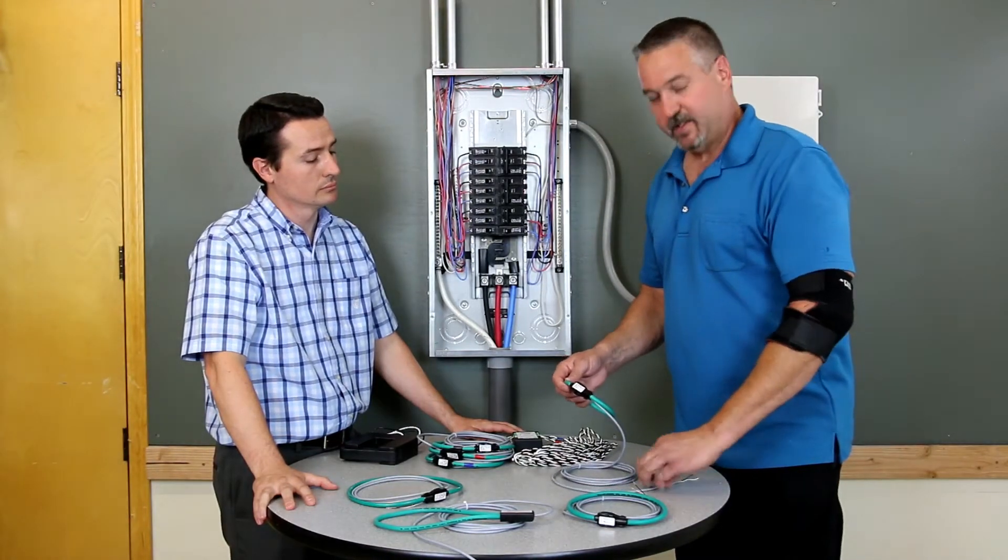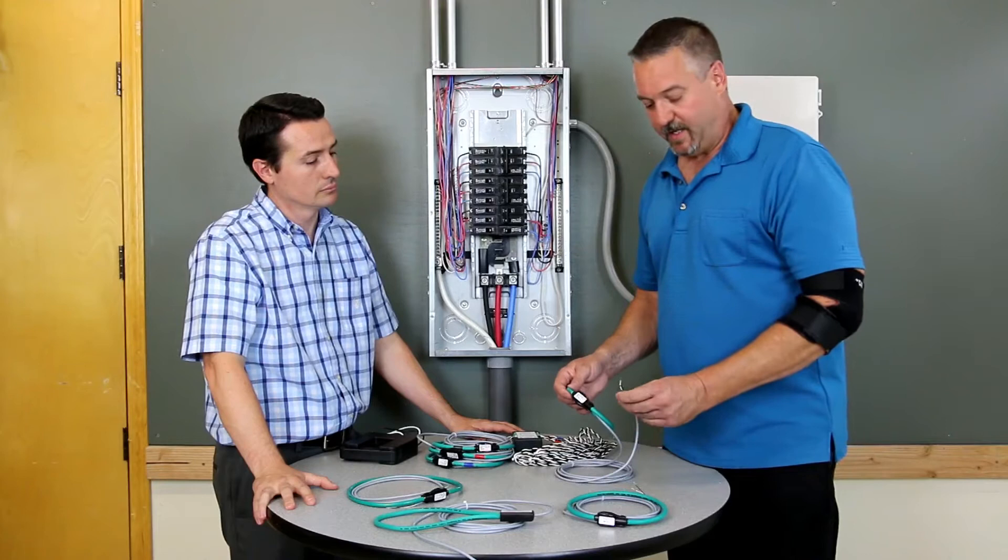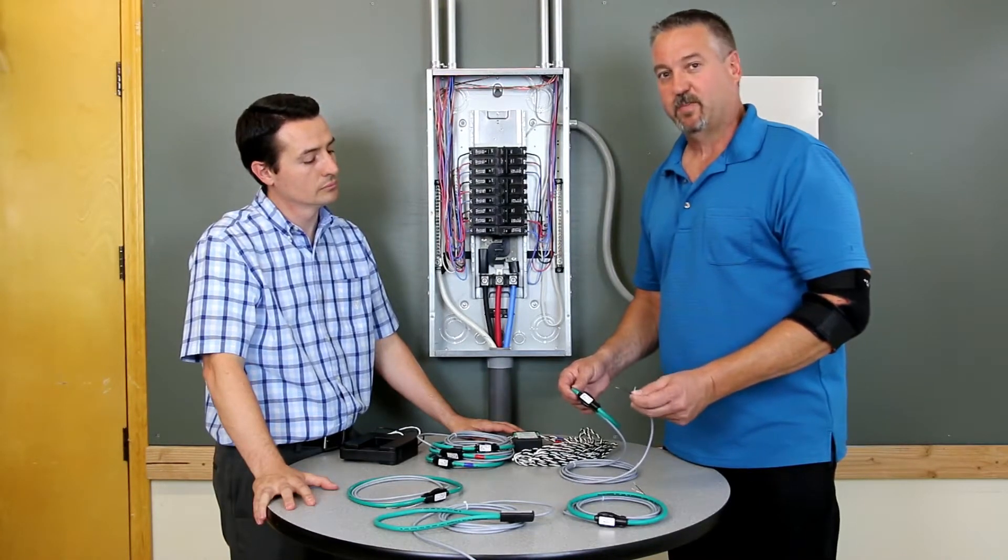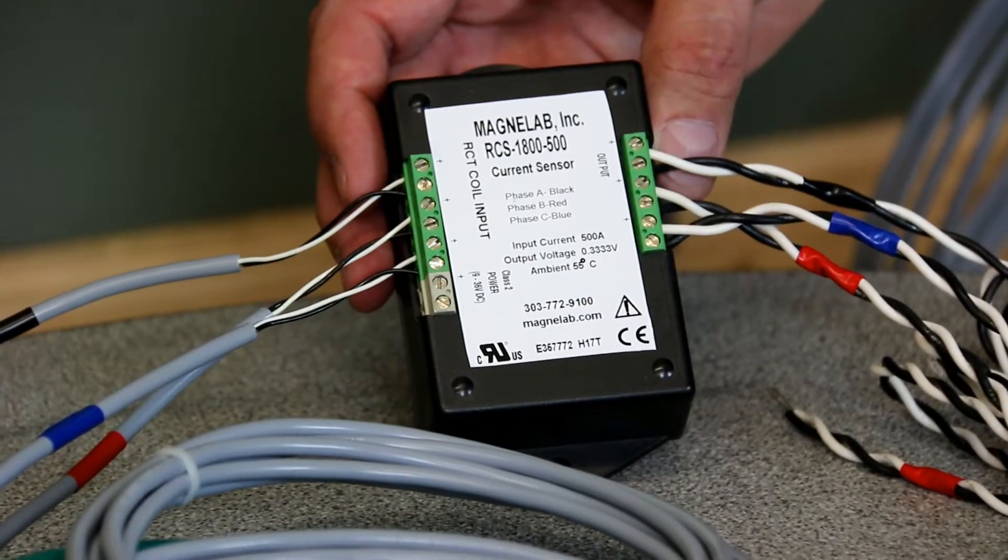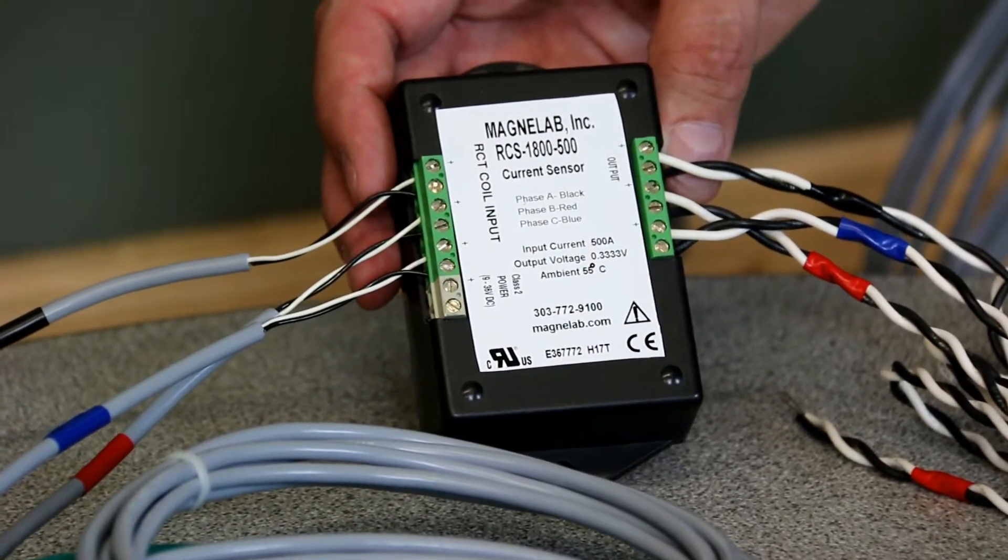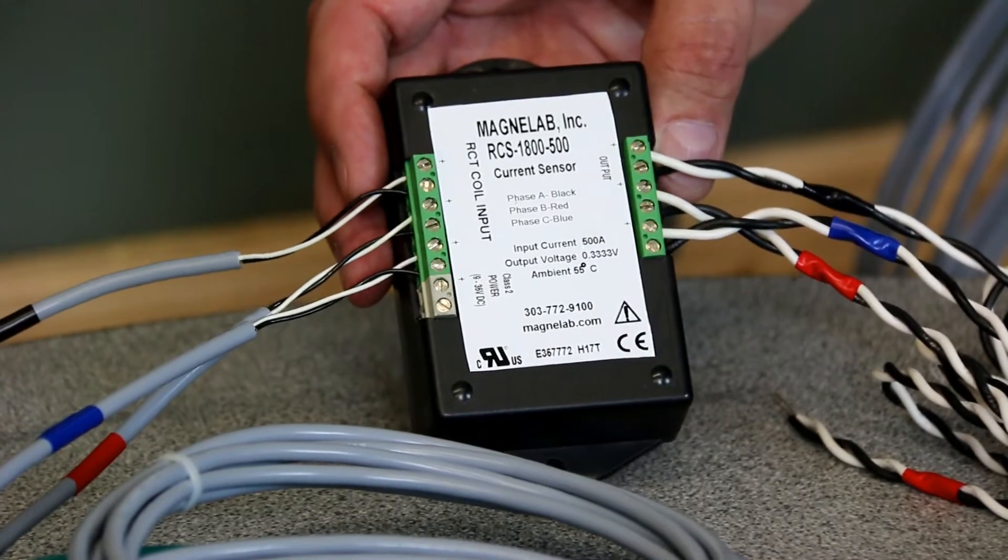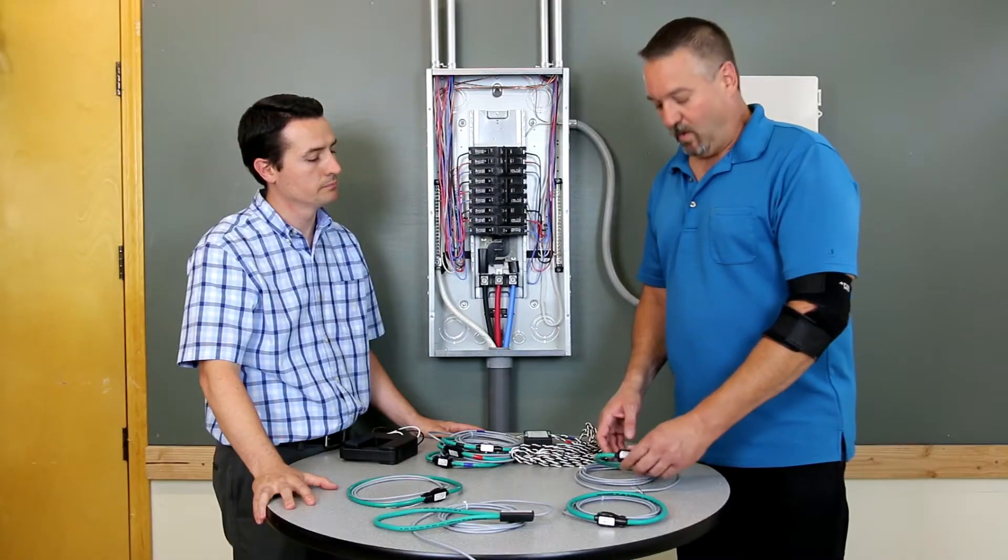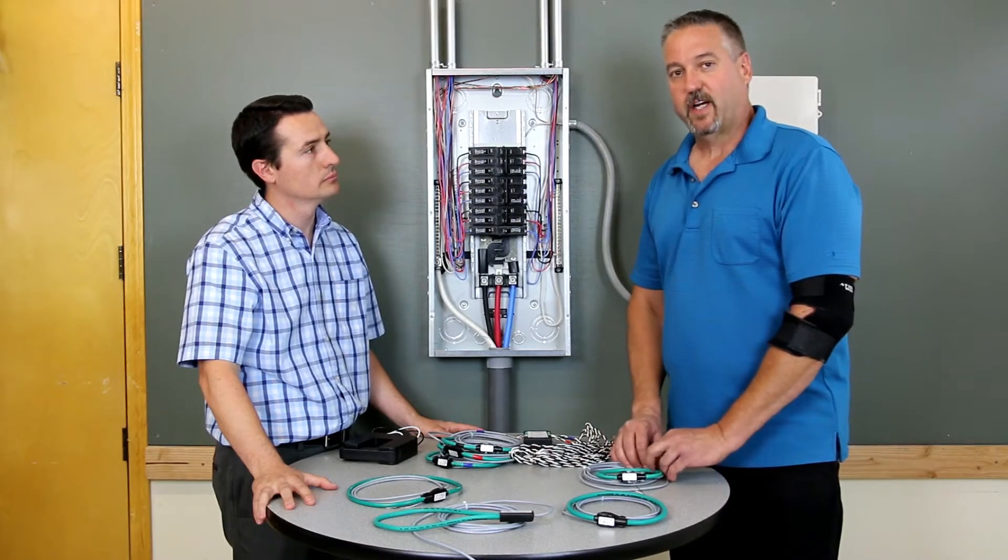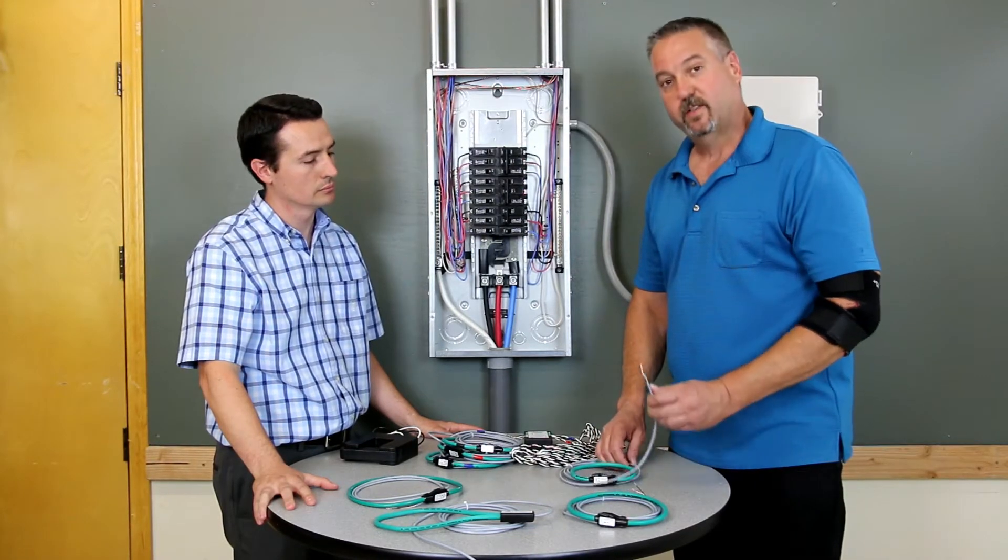The output is a voltage output that in our case runs 70 millivolts per thousand amps through the center of the coil. That then is put through a Magnolab integrator which converts that to a third of a volt, which is a standard in the industry at your rated current. In some cases there are meters out there that can take the raw output of the coil directly.